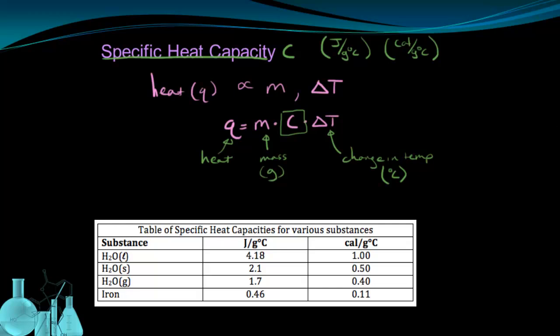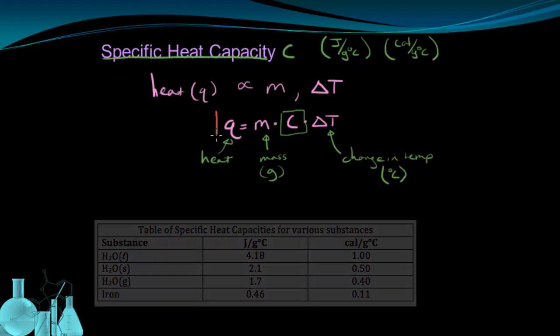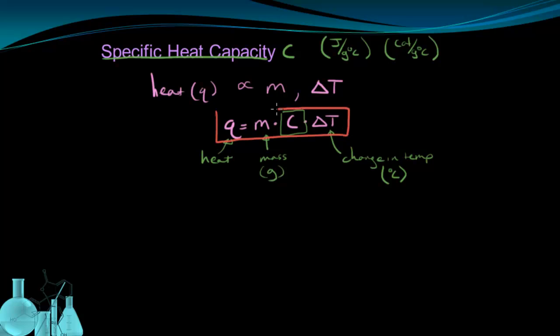It's also interesting to point out that water has different specific heat capacities at different phases. Ice cannot absorb as much heat as liquid water, and vapor can absorb even less heat. Let's take a look at how we can use this equation to figure out the amount of heat needed to change the temperature of a substance.